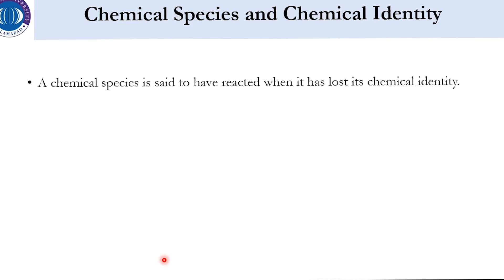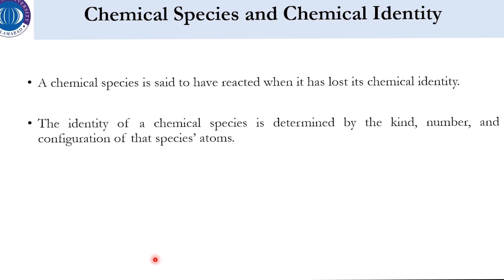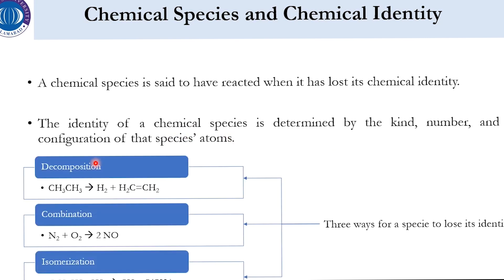A chemical species is said to have reacted when it has lost its chemical identity. A chemical species is anything which has some mass and is composed of atoms or molecules — like water or methane. When methane reacts with water to produce CO and hydrogen, methane has lost its chemical identity (formula CH₄), because properties like boiling point, freezing point, density, etc. would differ. Once it transforms to CO and H₂, the new species have different properties. The identity of a chemical species is determined by the kind, number, and configuration of its atoms.